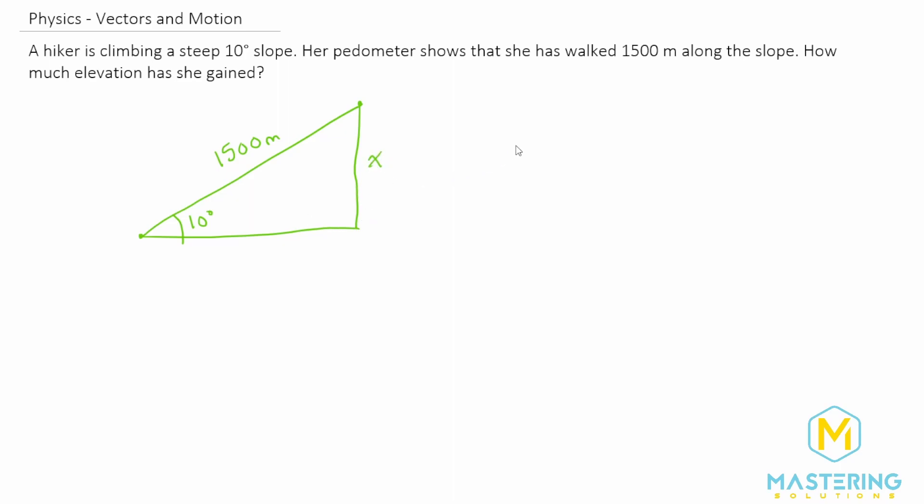So to do that, we're going to be using some trigonometry. We have the hypotenuse, which is 1500 meters, and we have the angle, but we need the opposite.